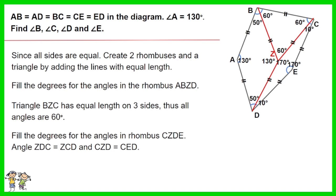Angle ZDC equals angle ZCD, and angle CZD equals angle CED. The result is angle B equals 110 degrees, angle C equals 70 degrees, angle D equals 60 degrees, and angle E equals 170 degrees.